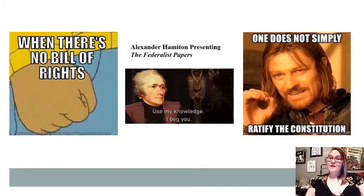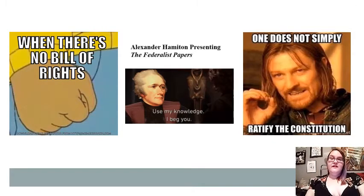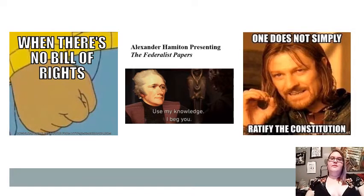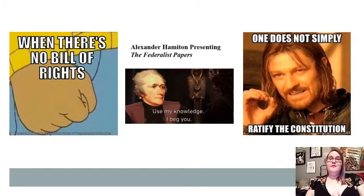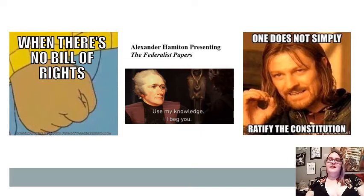The Federalist Papers came about because opposition to the ratification of the Constitution was especially strong in New York. Anti-Federalists published documents to criticize the Constitution, and these are called the Brutus Papers, arguing that the proposed Constitution could actually hurt American liberties that were fresh in everyone's minds since the Revolution had only ended about a decade prior.